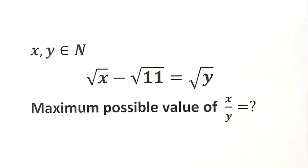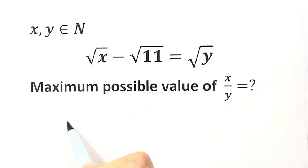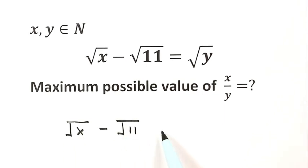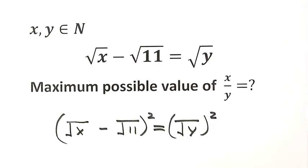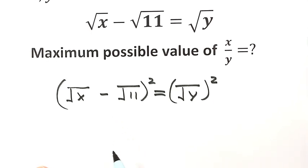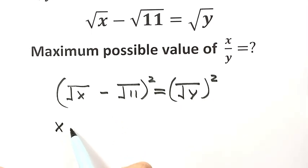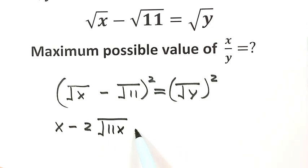This question is from the UK Senior Mathematical Challenge. Starting from the given equation, the square root of x minus the square root of 11 equals the square root of y. Let's square both sides and expand the left-hand side. We get: x minus 2 times the square root of 11x, plus 11, equals y.